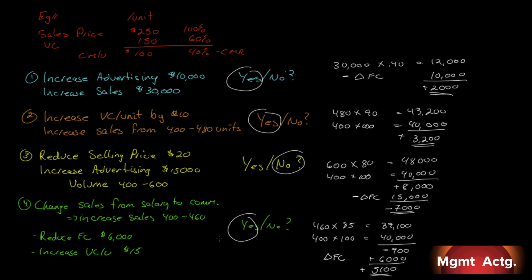I didn't write out a single income statement — I want to stress that point. Here are some general rules: if the increase in contribution margin is greater than the increase in fixed costs, do it. If the drop in our contribution margin is less than the drop in fixed costs, do it. Everything else is a no.